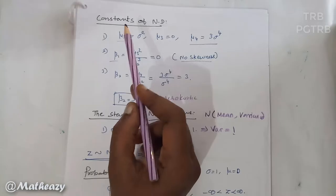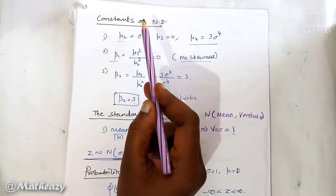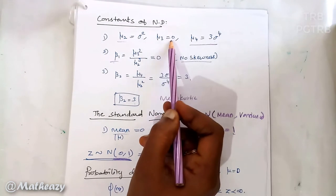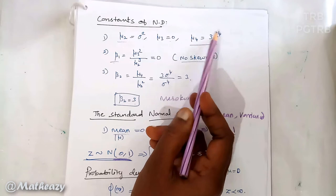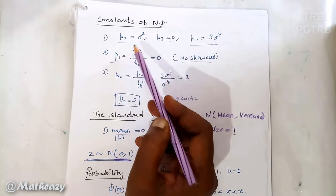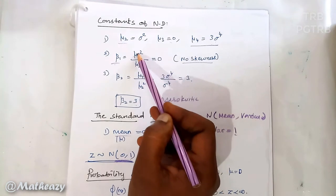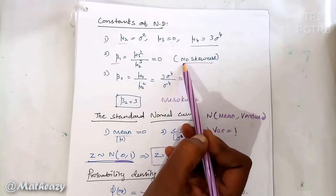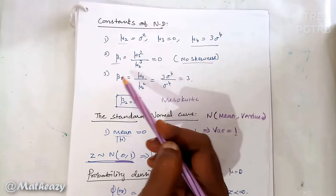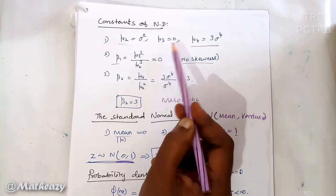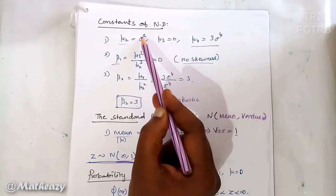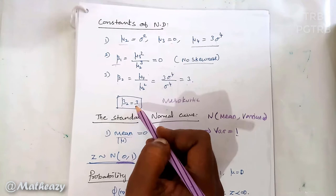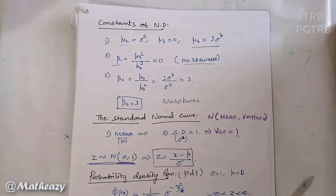The moment constants of the normal distribution are: mu-2 (variance) = sigma squared, mu-3 = 0, mu-4 = 3 sigma to the power 4. Therefore beta-1 = mu-3² / mu-2³ = 0² / (sigma²)³ = 0, so skewness is 0. And beta-2 = mu-4 / mu-2² = 3sigma⁴ / sigma⁴ = 3. Therefore beta-2 equals 3.